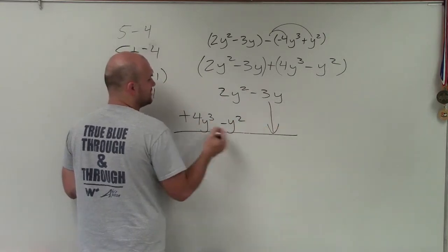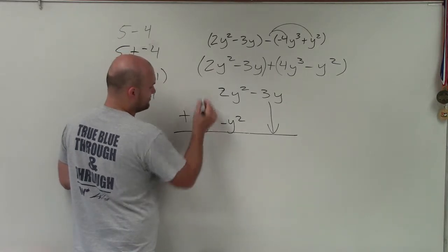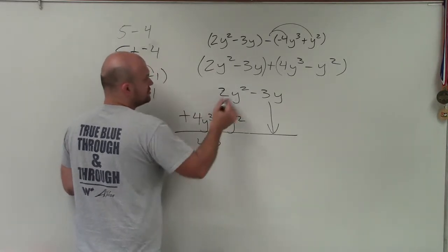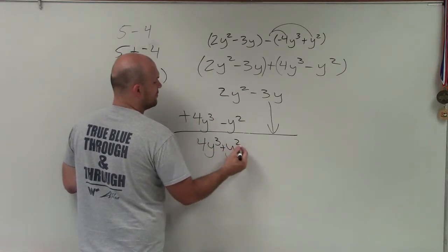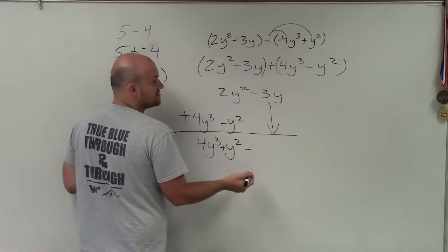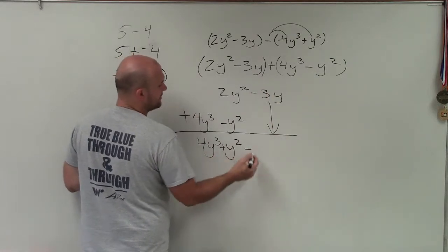And you can see this one's going to go straight down. There's nothing here. So when I add them, nothing to add to 4y cubed, so I just bring that down. 2y squared plus negative y squared is just going to be a positive y squared. And then I just bring that answer down. There's nothing to combine it with, which would be a negative 3y.